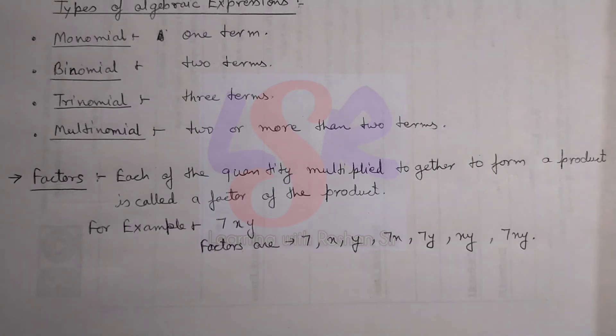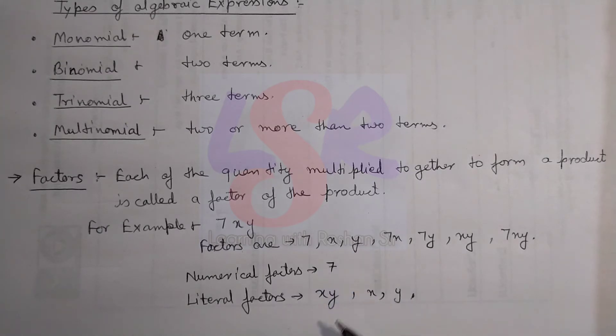For example, if you take 7xy, in that case factors are 7, x, y, 7x, 7y, xy, and 7xy itself. This can further be classified as numerical factors and literal factors. Here we have 7 as the numerical factor and x, y as literal factors.